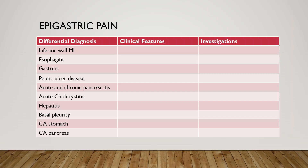Hello everyone, today our topic of discussion is differential diagnosis of epigastric pain. Any patient presenting with epigastric pain to the ER — always rule out inferior wall MI, because that can be the only presentation of inferior wall MI. It can cause epigastric pain, so always get an EKG and check troponin.